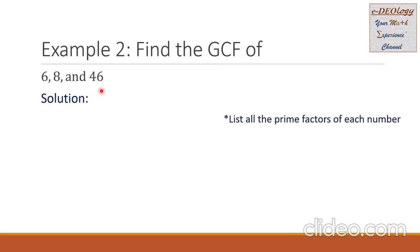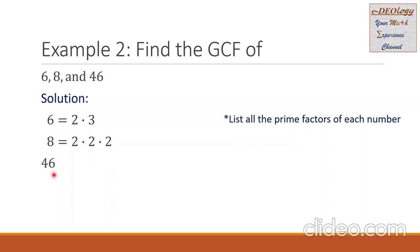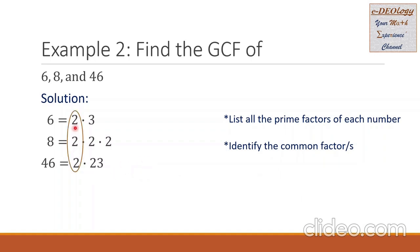Example 2: find the GCF of 6, 8, and 46. We are going to list all the prime factors of each number. Let's begin with the number 6 — the prime factors are 2 and 3. For number 8, the prime factors are 2 times 2 times 2. Then we identify the common factor.